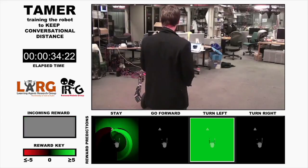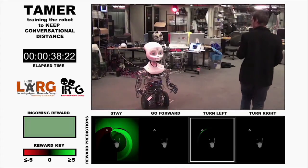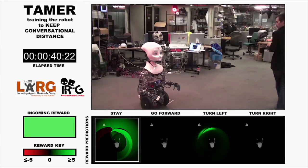Now predicting negative reward for staying, Nexi tries something new. It turns out to be correct, so I proceed to paint the turn left action.